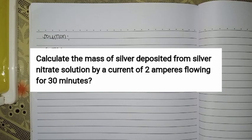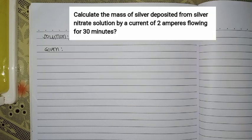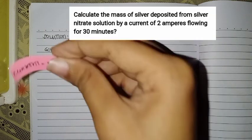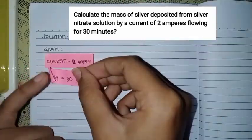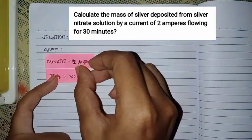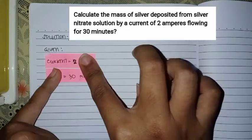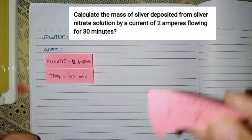The next sample problem is: calculate the mass of silver deposited from silver nitrate solution by a current of 2 amperes flowing for 30 minutes. Our given is current which is 2A and time which is 30 minutes.